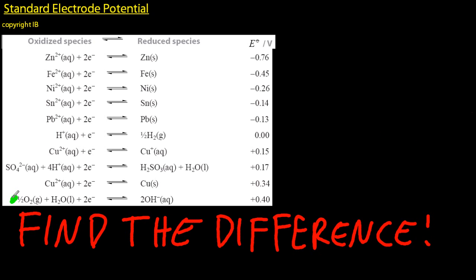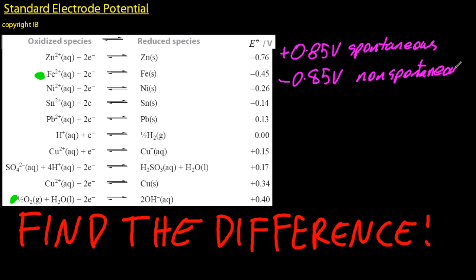Pick another two, these two here. If it's spontaneous, if the battery works, it's 0.85 volts, and it's minus 0.85 volts if it's a non-spontaneous battery. It won't work. I'm not even sure what that means, but here we go.